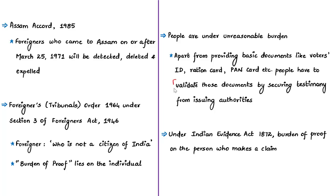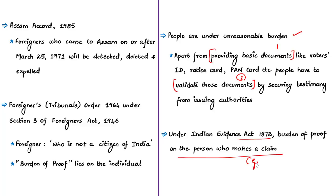The author tells us the burden doesn't end there — individuals have to validate those documents by securing testimony from the respective issuing authorities. Under the Indian Evidence Act of 1872, the burden of proof in any court lies on the person who seeks to make a claim or assert a fact. This means that before Foreigners Tribunals, the burden of proof should have been on the government, as it is the government asserting that certain persons are foreigners. But the reverse applies here as per the Foreigners Act of 1946.